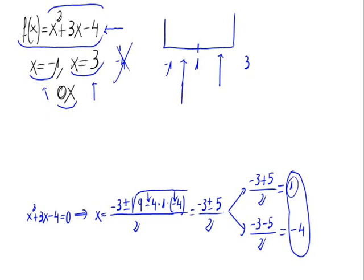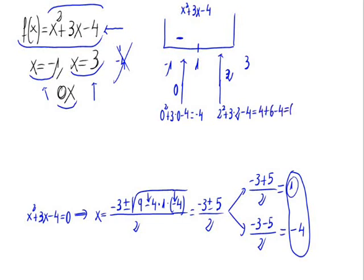Let's substitute a test value between -1 and 1 — we can use 0 — and a value between 1 and 3, which would be 2. Substituting into the function: f(0) = 0² + 3·0 - 4 = -4, which is negative. And f(2) = 2² + 3·2 - 4 = 4 + 6 - 4 = 6, which is positive.